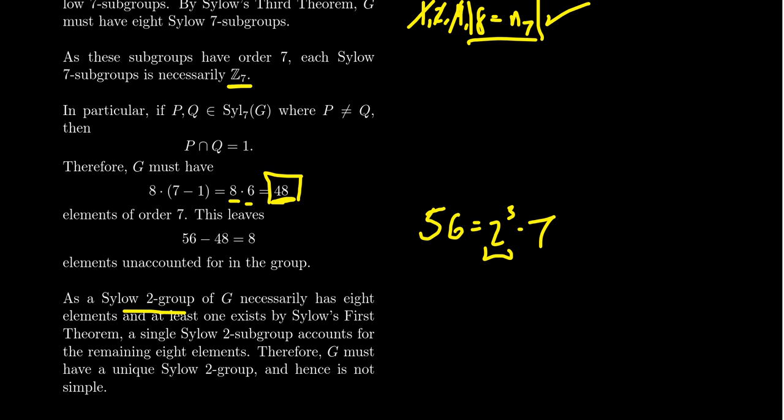There has to be at least one. It contains 8 elements and none of those elements are of order 7. So these 8 remaining elements that aren't order 7 have to be the 8 elements of this Sylow 2 subgroup. It contains all of them.